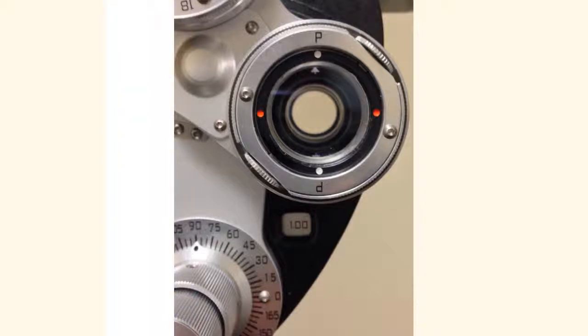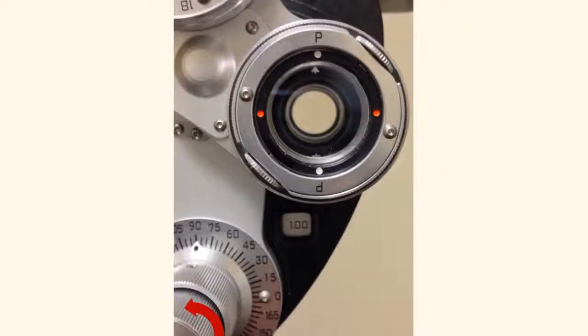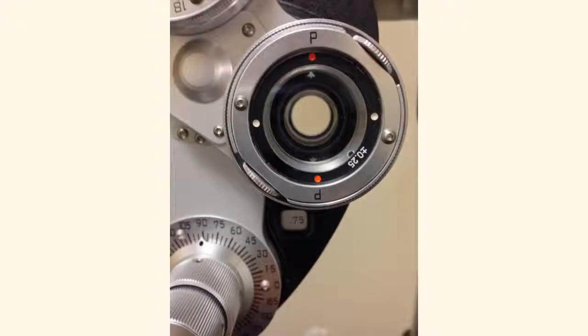If they choose the option where the red dots are below the P's, we're going to rotate the cylinder power dial so that they now have a cylinder power of 0.75.